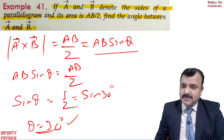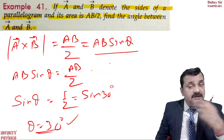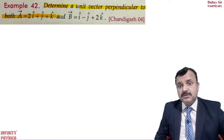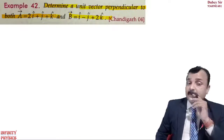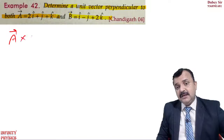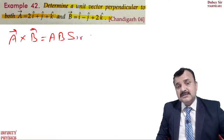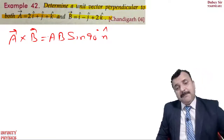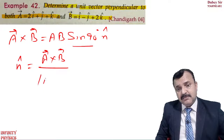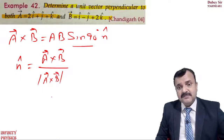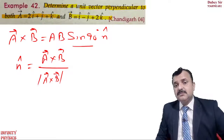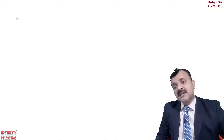Next question: determine a unit vector perpendicular to both given vectors. If you need any doubts clarified, you can send me a message. To find a unit vector perpendicular to both A and B: since A cross B = ab sin90° into n̂, and sin90° = 1, we get n̂ = (A×B) / |A×B|. So first calculate A cross B, then divide by its magnitude.